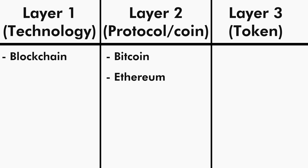Besides Bitcoin, we also have lots of other protocols in crypto, like Ethereum — you might have heard about it; it has recently moved from proof of work to proof of stake consensus protocol. Then we have Ripple, NEO, Litecoin, and lots of others.